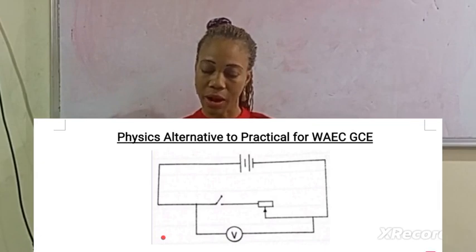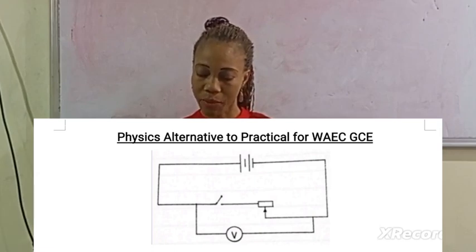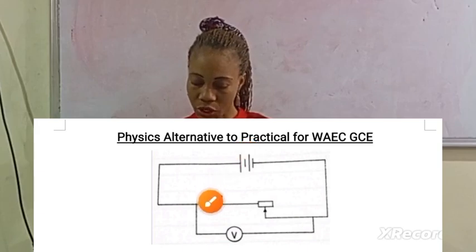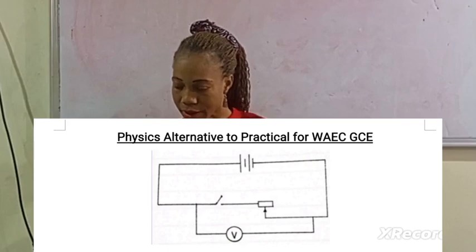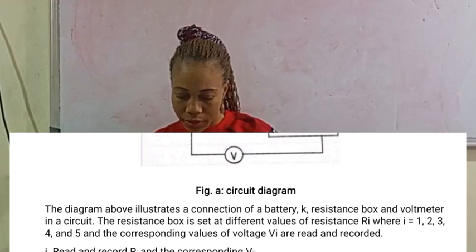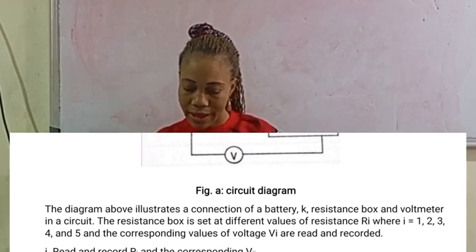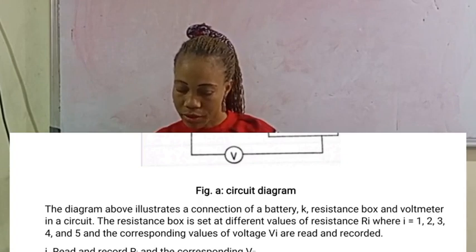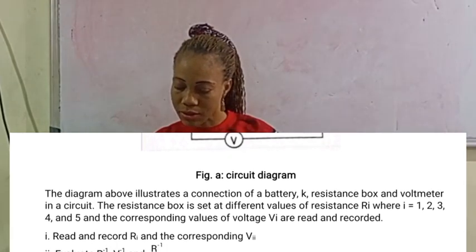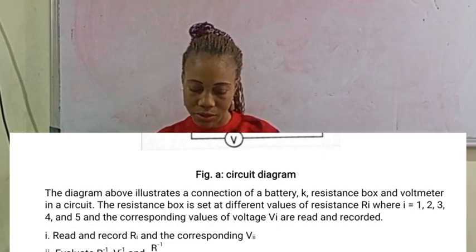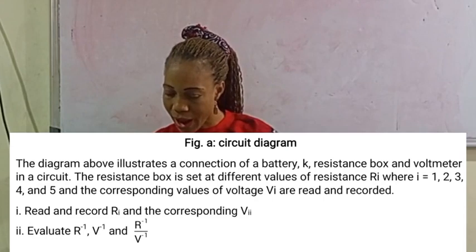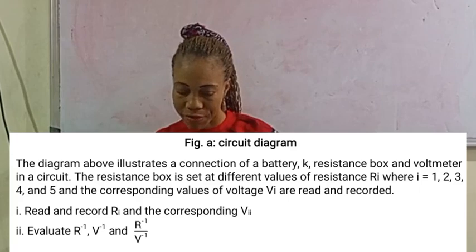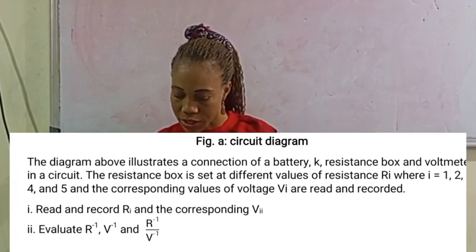This is the circuit diagram — this is how it will look. This is for the battery, this is the key, this is the resistor, and the voltmeter. The diagram illustrates a connection of a battery, K, a resistance box, and a voltmeter in a circuit. The resistance box is set at different values of resistance R_i, where i equals one, two, three, four, and five, and the corresponding values of voltage V_i are read and recorded.